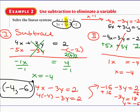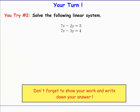Now try this one on your own. The hint is that you're going to eliminate the x's, because you have 7x and 7x. You can either use subtraction or change one equation to make it negative 7x — your choice. Make sure the answer is correct by checking it at the end.